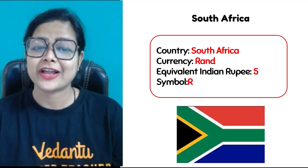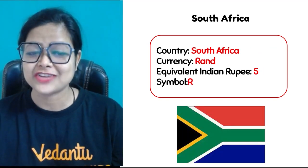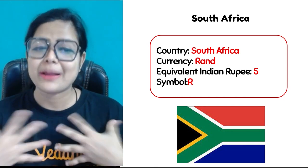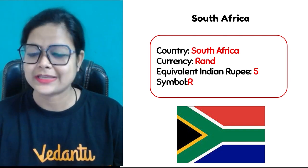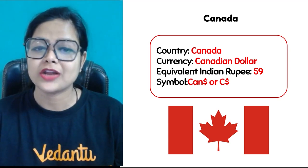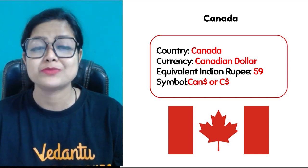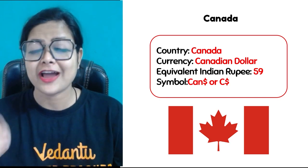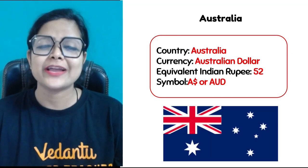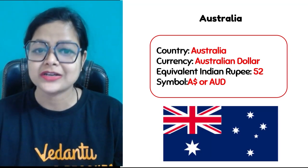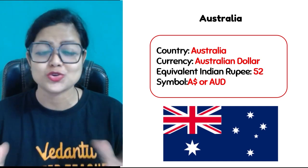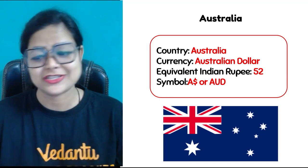If I talk about South Africa, the currency is Rand, and the equivalent in Indian rupees is 5, which means our 5 rupees is 1 Rand. If I talk about Canada, the Canadian dollar is 59 rupees, so our 59 rupees is 1 Canadian dollar. If I talk about Australia, the currency is the Australian dollar, and 52 rupees are equal to 1 Australian dollar.